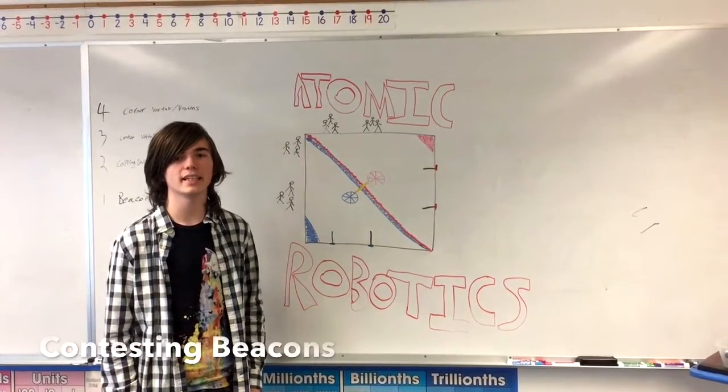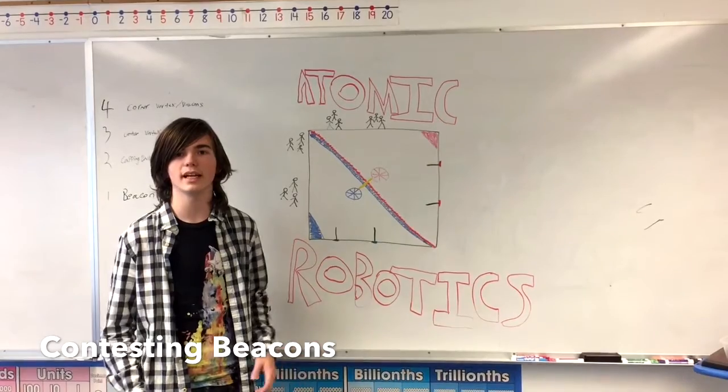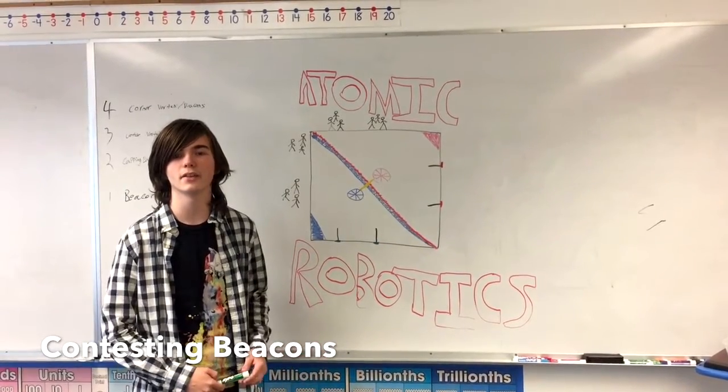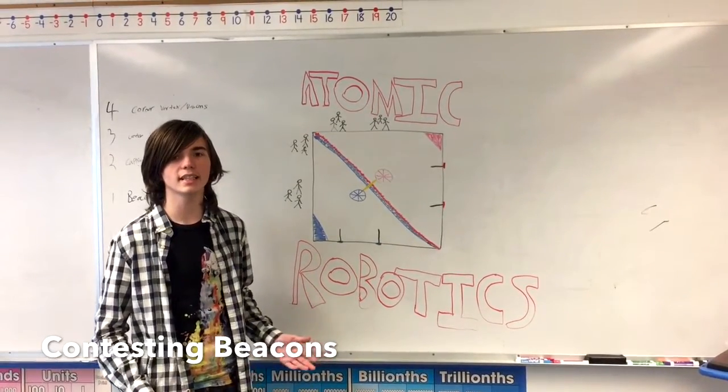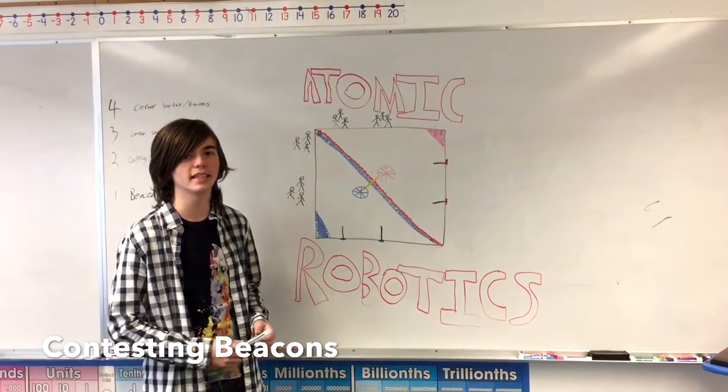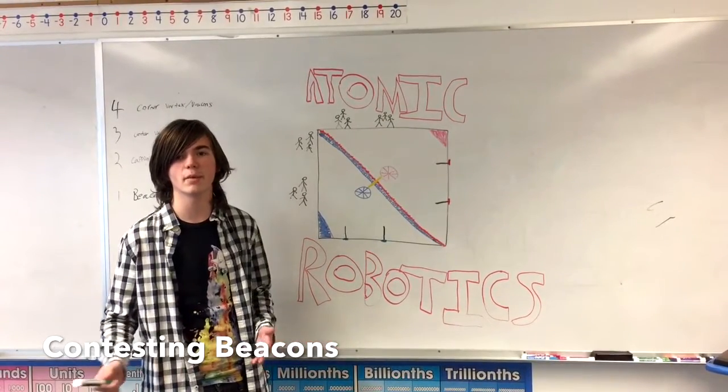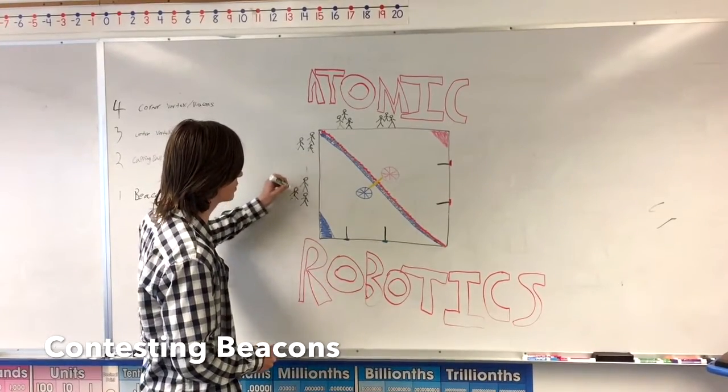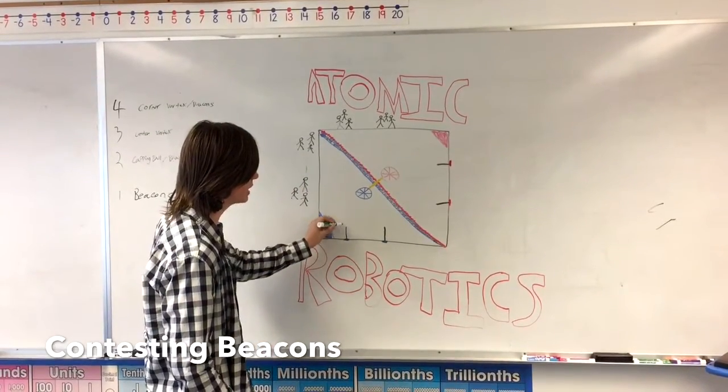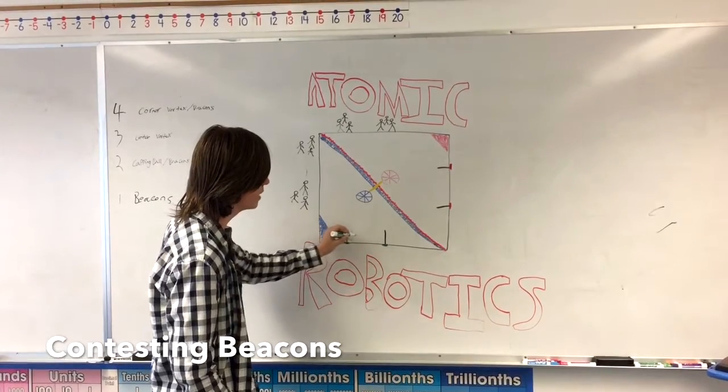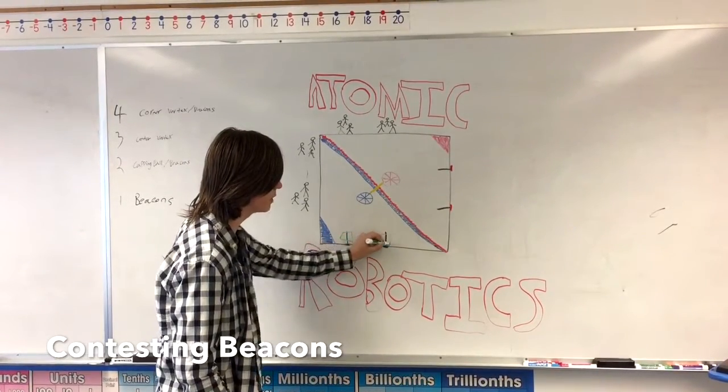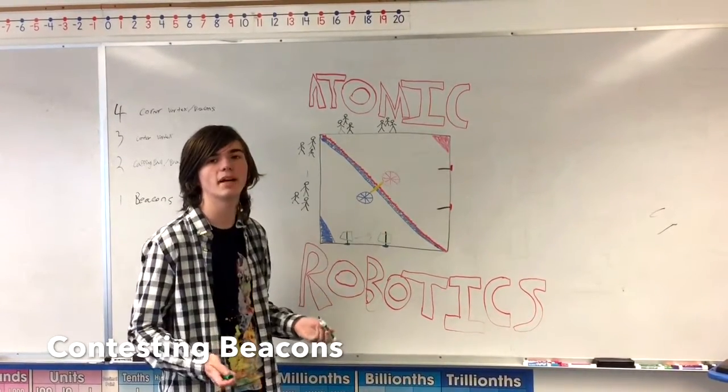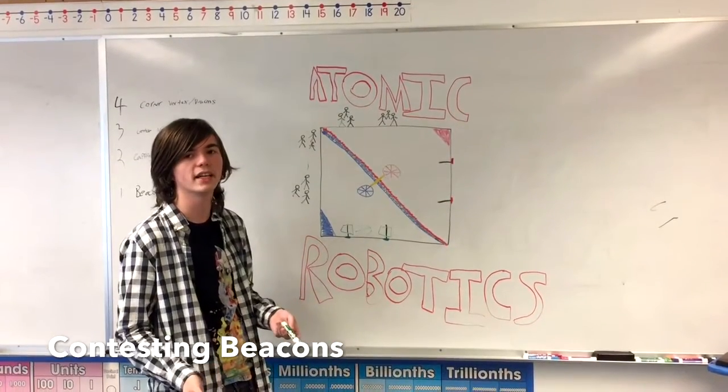The first strategy I'd like to discuss is something that we'll probably see a lot at the beginning league plays, or whatever your local equivalent is, and that's essentially just contesting beacons throughout the entirety of tele-op and endgame. Here's our beacon contestors, group one. Essentially the idea is you just keep going to the beacons in tele-op and keep contesting them so that other teams will have to take time out of their strategy to bring them back to their color.